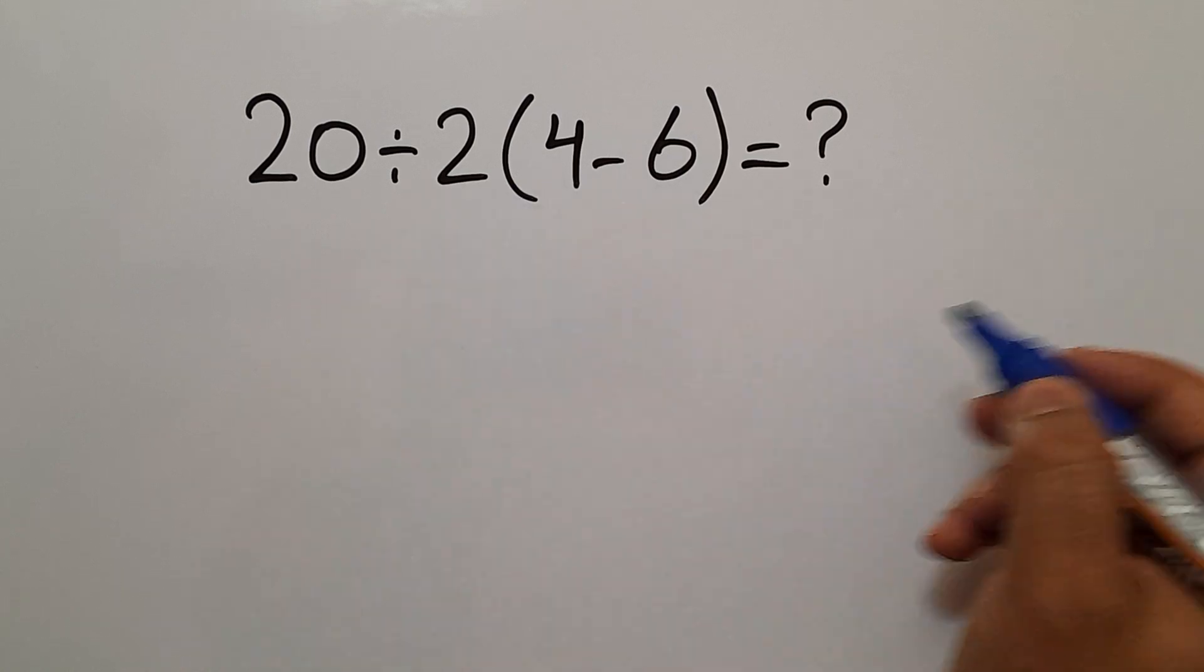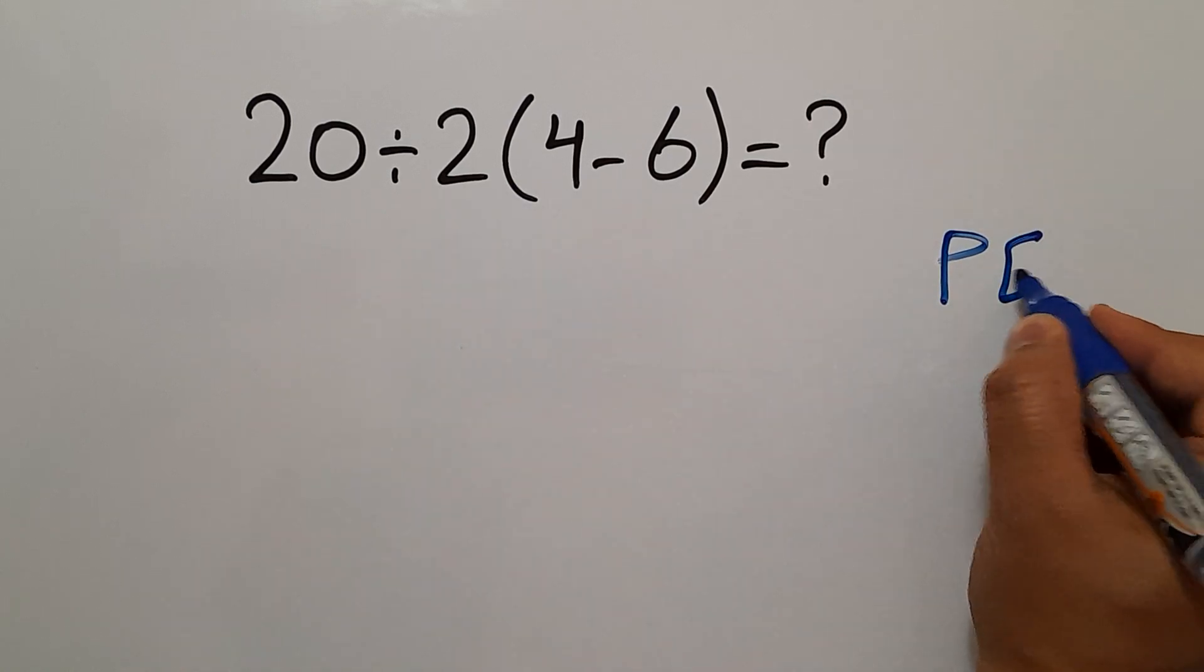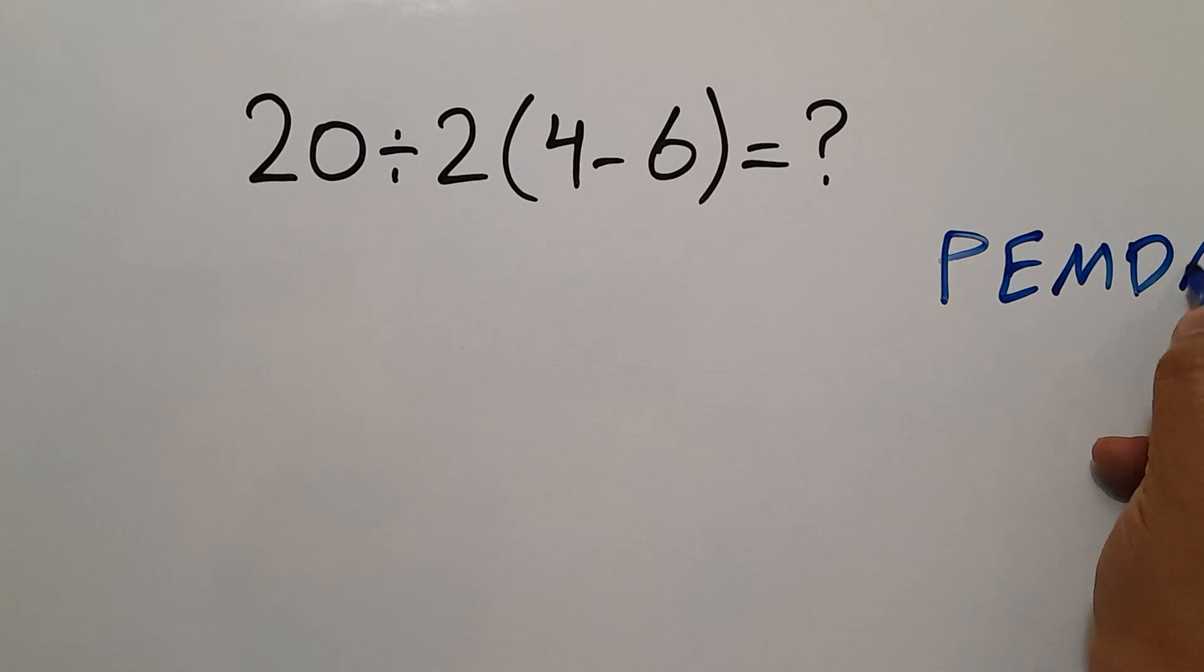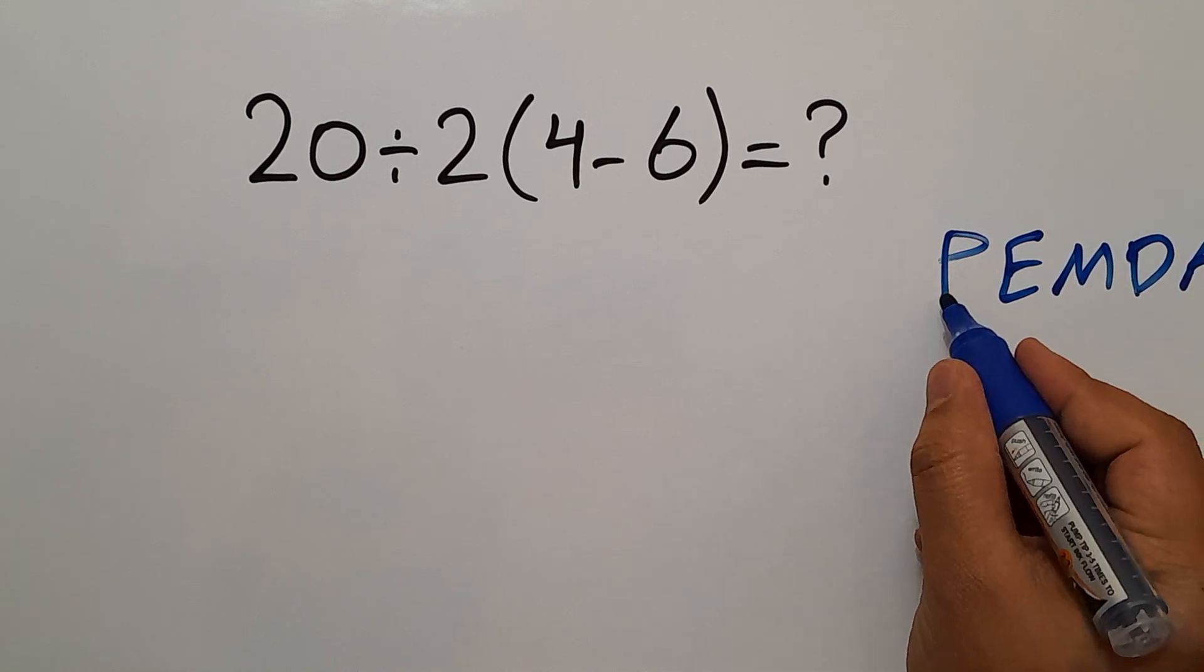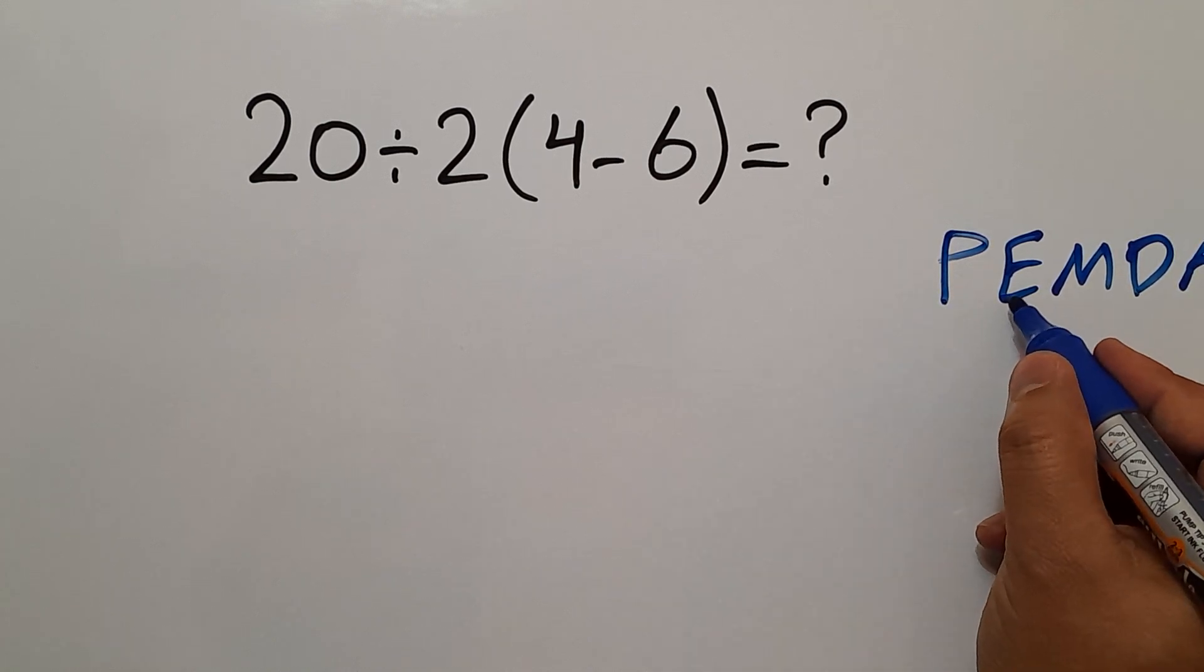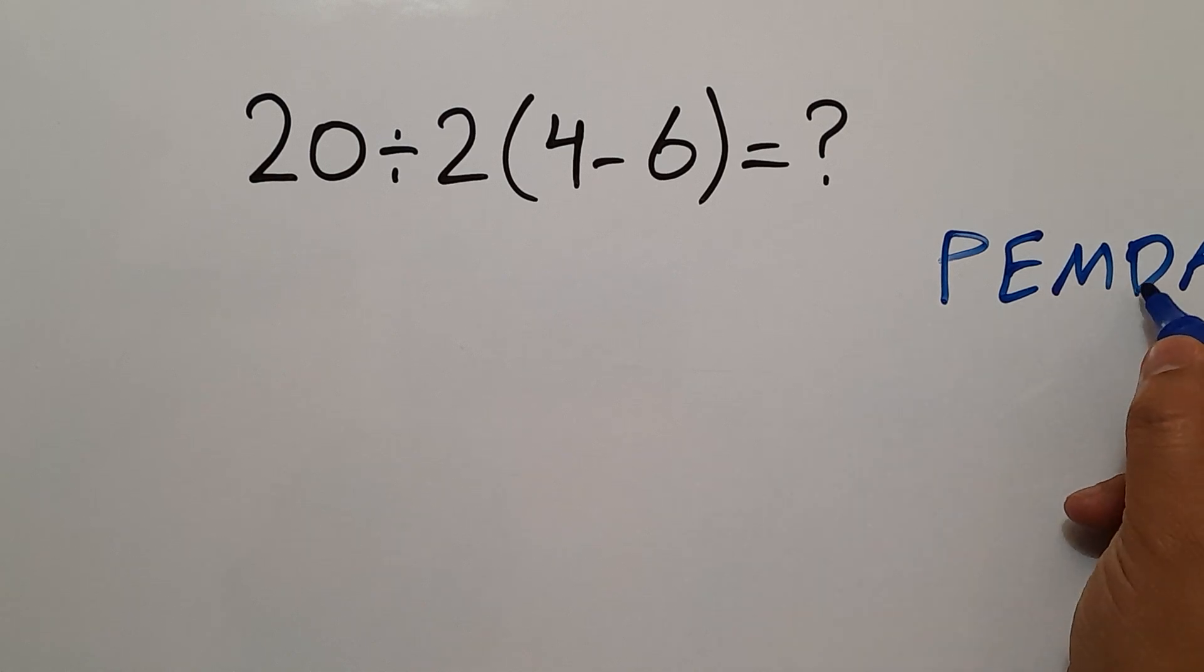According to the order of operations, which is PEMDAS, P stands for parentheses, E stands for exponents, M and D stands for multiplication and division, and A and S stands for addition and subtraction. Remember that multiplication and division have equal priority and we work from left to right. And the same goes for addition and subtraction.